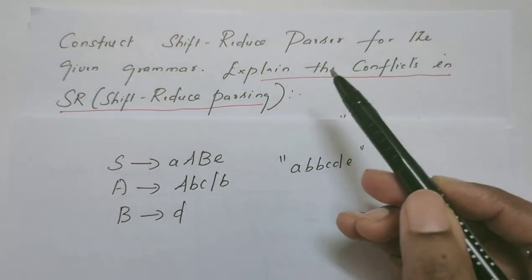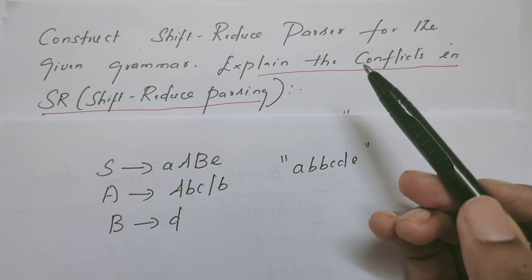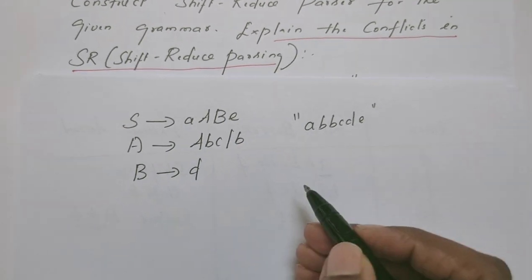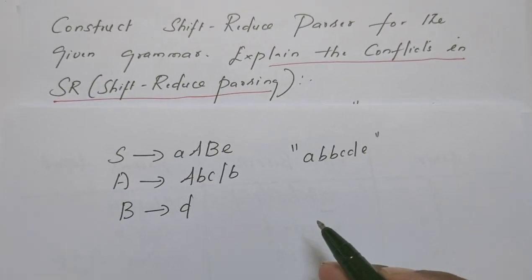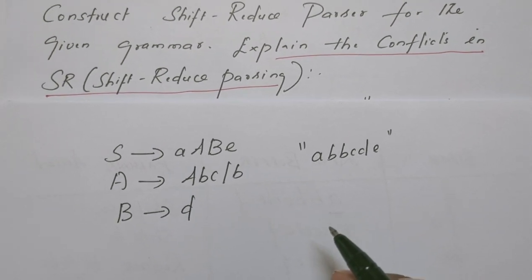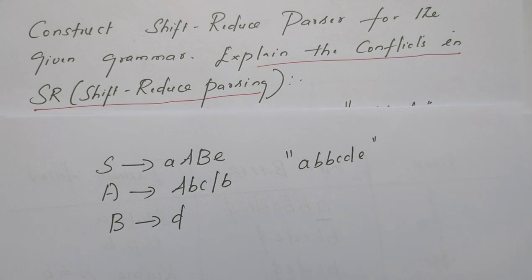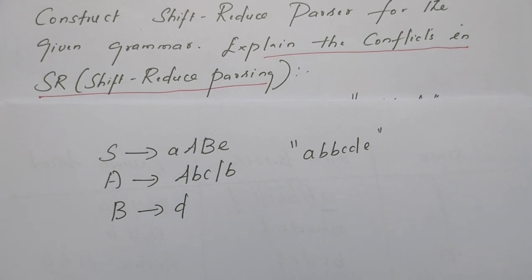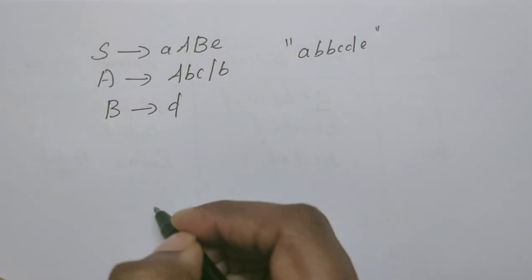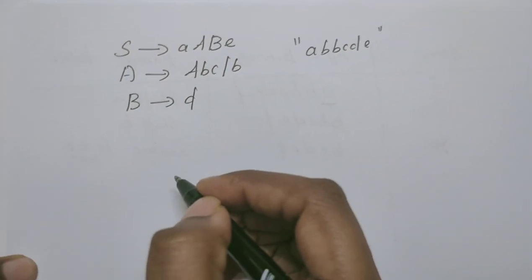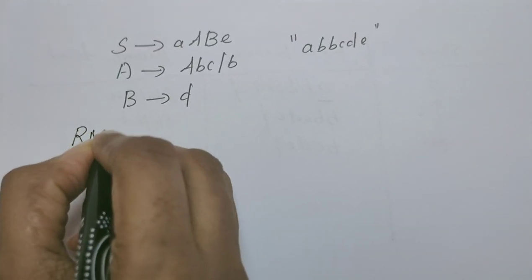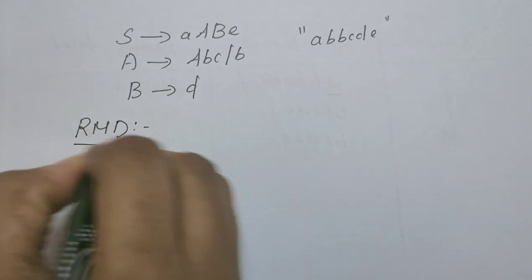Now let's construct the shift-reduce parser for the given grammar and parse the string A, B, B, C, D, E. When we manually construct the shift-reduce parser, we come across the same problems — shift-reduce conflict and reduce-reduce conflict. To avoid manual mistakes while building the table, we first do the rightmost derivation of the given string, then construct the table. That avoids confusion.